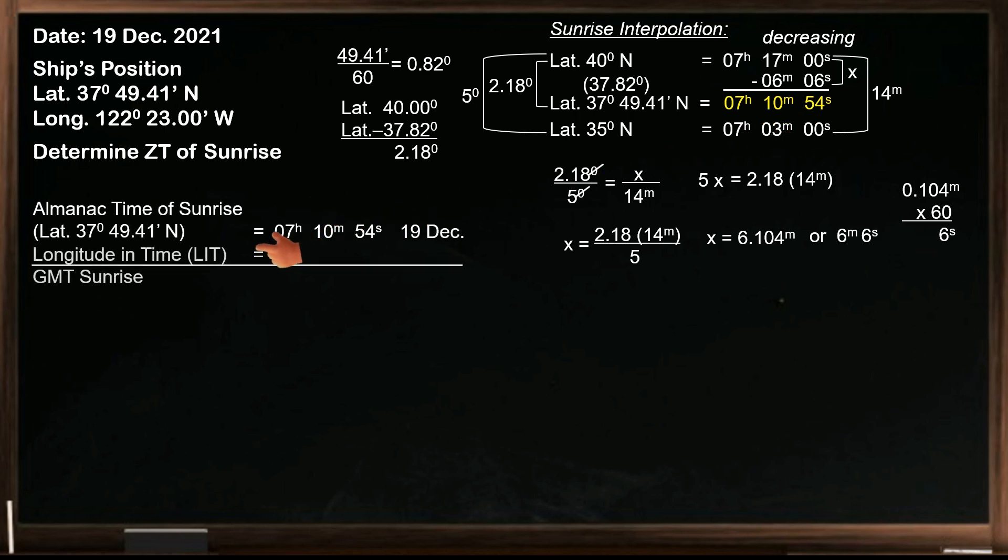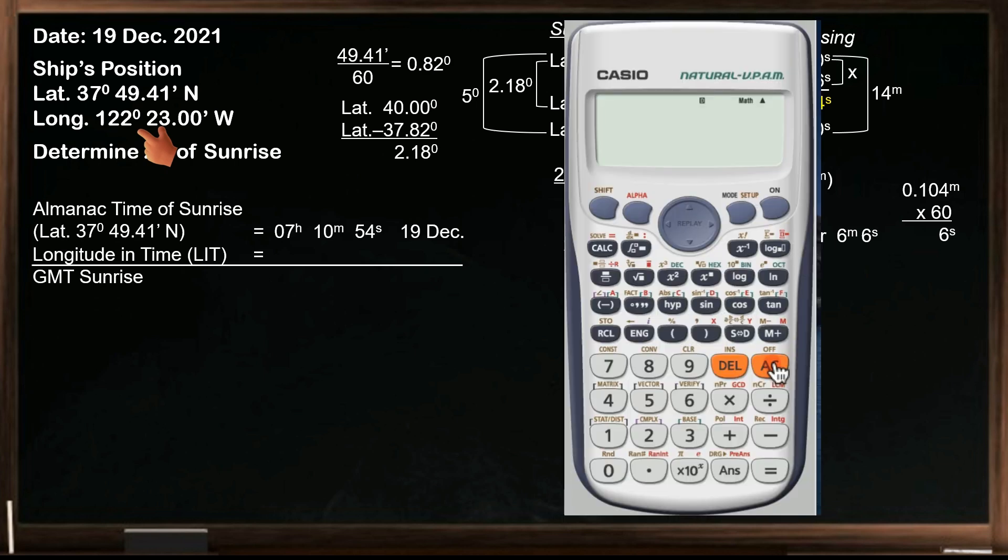Next, apply longitude and time to determine the universal time of sunrise. So we need to convert the longitude into time. This is simple if you have a calculator. Enter 122 degrees 23 decimal 0 minutes, then divide by 15 and press equals. Just change the unit of an arc to a unit of time. So our longitude in time is 8 hours 9 minutes 32 seconds.